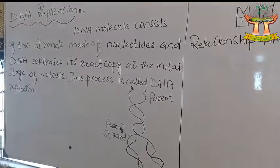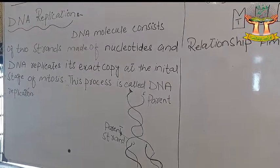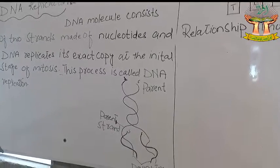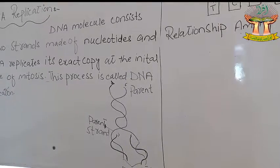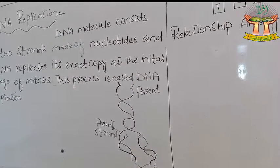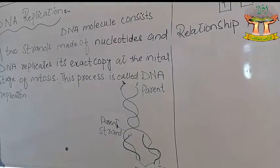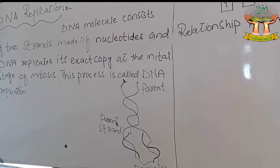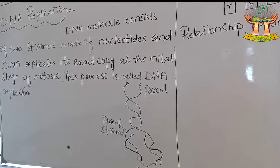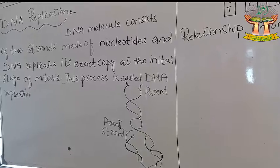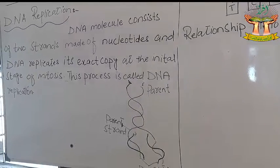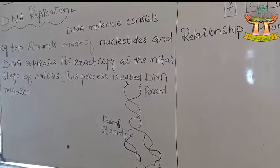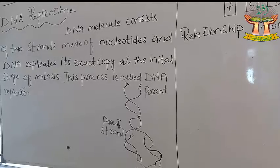In the second stage, we prepare a new partner strand for each separated strand by using new nucleotides. In this manner, the double-stranded DNA molecule replicates its exact copy and two DNA molecules are formed from one.